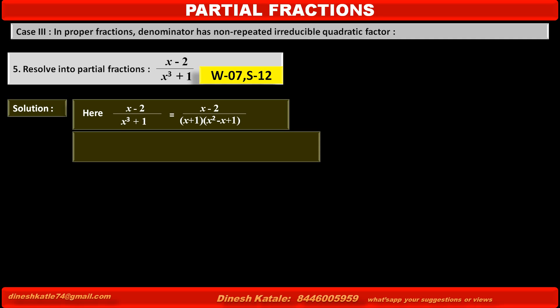Therefore, by taking numerator A for (x plus 1) and (Bx plus C) for the quadratic factor (x squared minus x plus 1), we write: let the given fraction (x minus 2) upon (x plus 1)(x squared minus x plus 1) equal A upon (x plus 1) plus (Bx plus C) upon (x squared minus x plus 1).